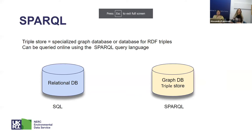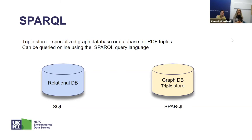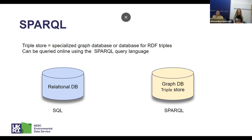RDF, SKOS, and the URIs can all be stored in a triple store, which is a specialized graph database where you store RDF triples. These triples can then be queried online using a SPARQL query language, which is the equivalent of the SQL language for relational databases. Several of our tools in NVS are based on our SPARQL endpoint.